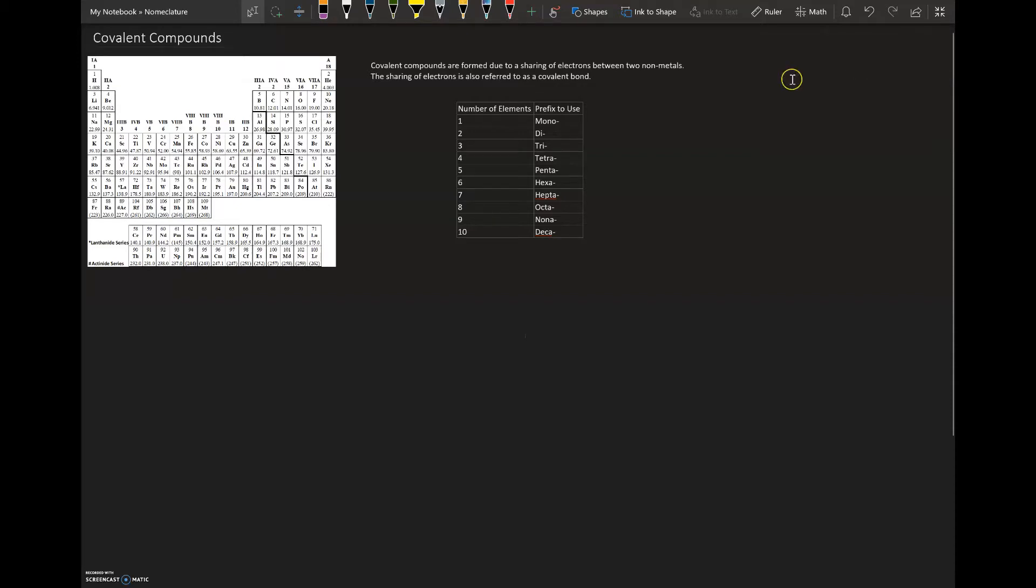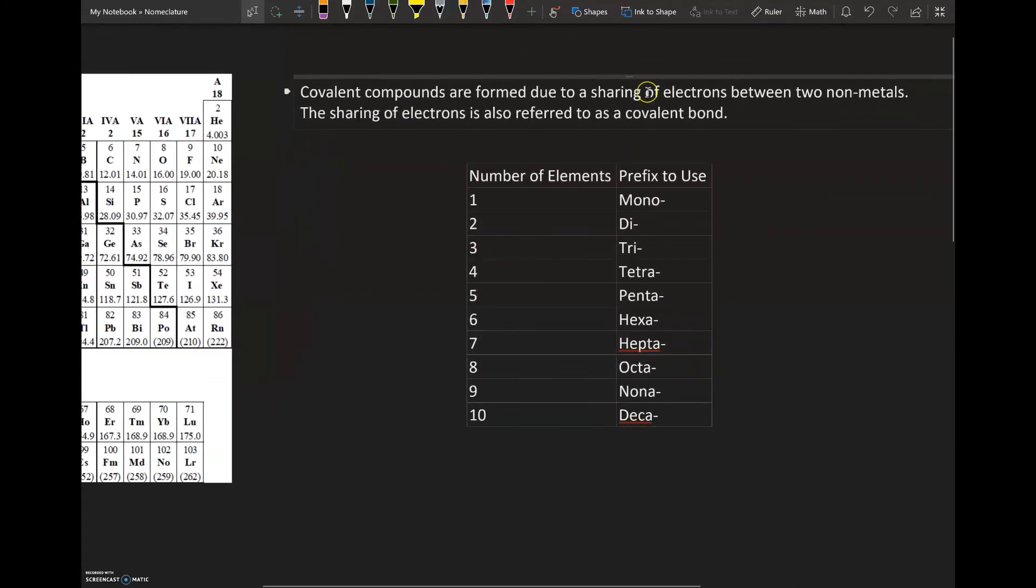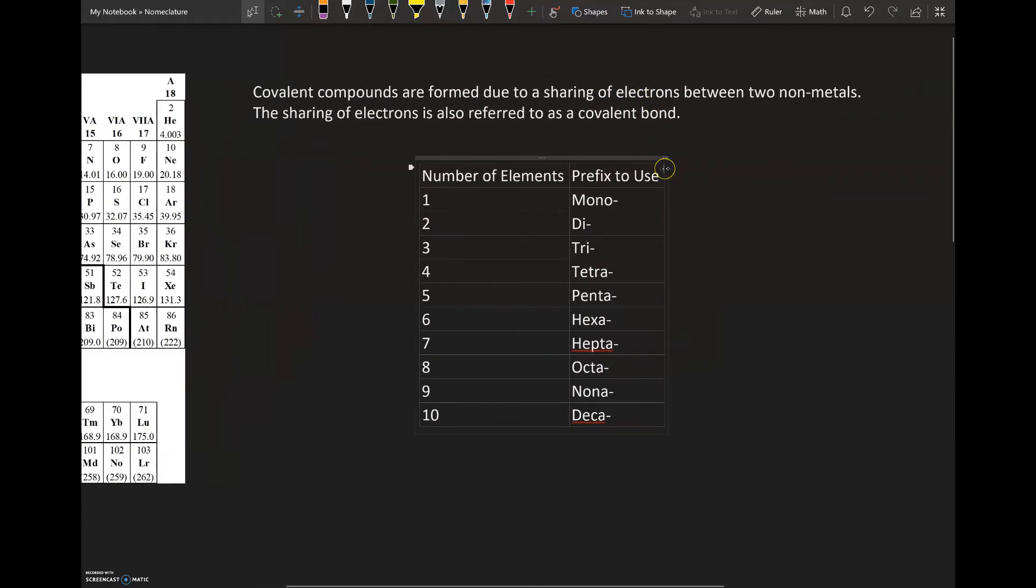Covalent compounds are formed due to a sharing of electrons between two non-metals. The sharing of electrons can also be referred to as a covalent bond. Covalent bonds only form between non-metals.